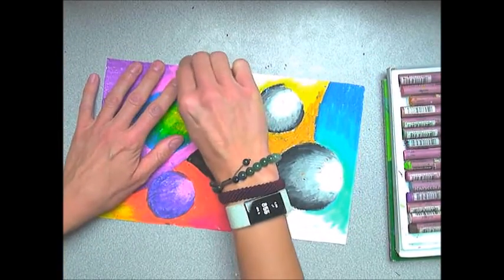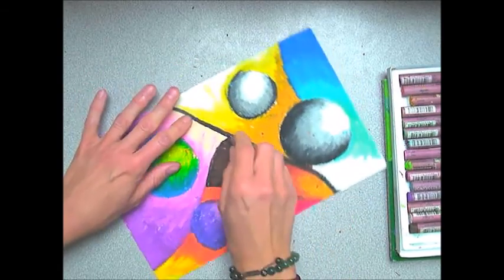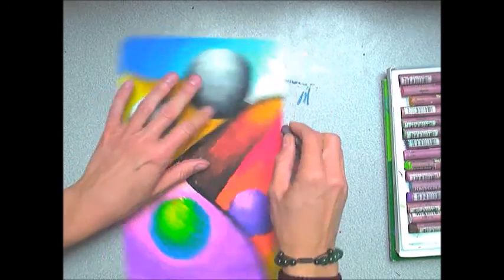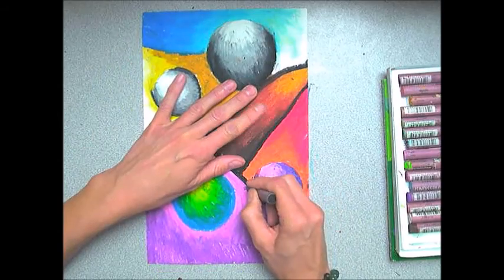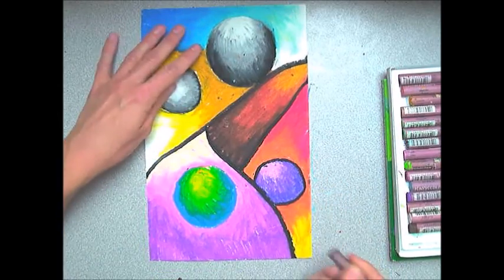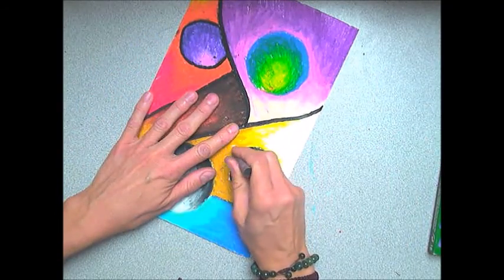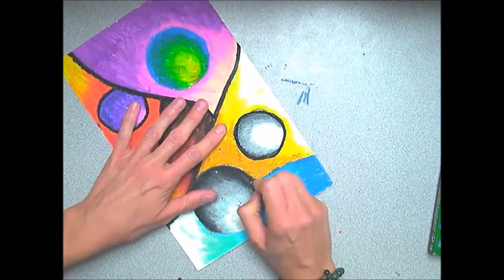Now for the very last step you're going to take your black oil pastel in your kit and you're just going to very carefully pull the oil pastel towards you and draw in long smooth lines on every single pencil line that we did. So that includes all of the circles that we originally did, that includes the background sections that we divided. So pretty much every time that you switch colors you're basically outlining all those pencil lines that we did.